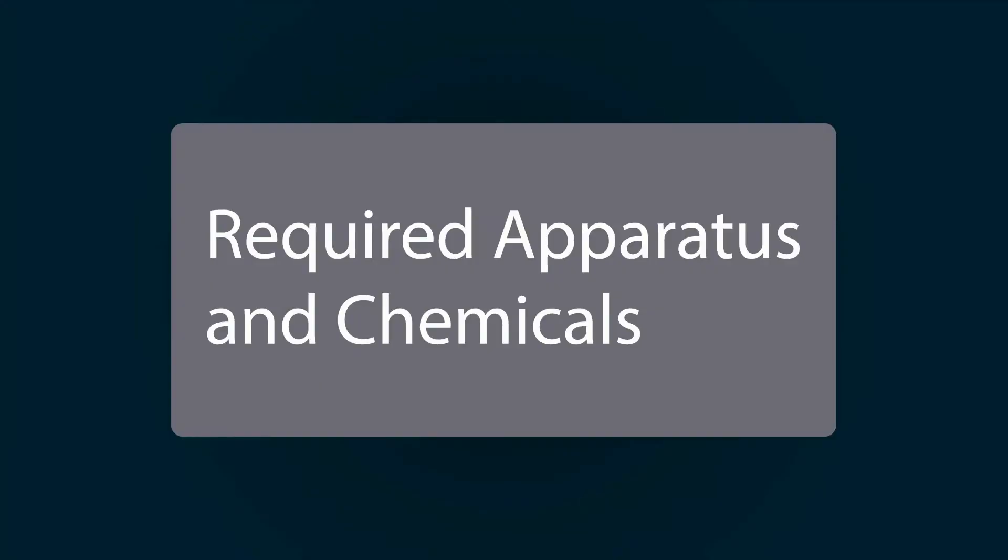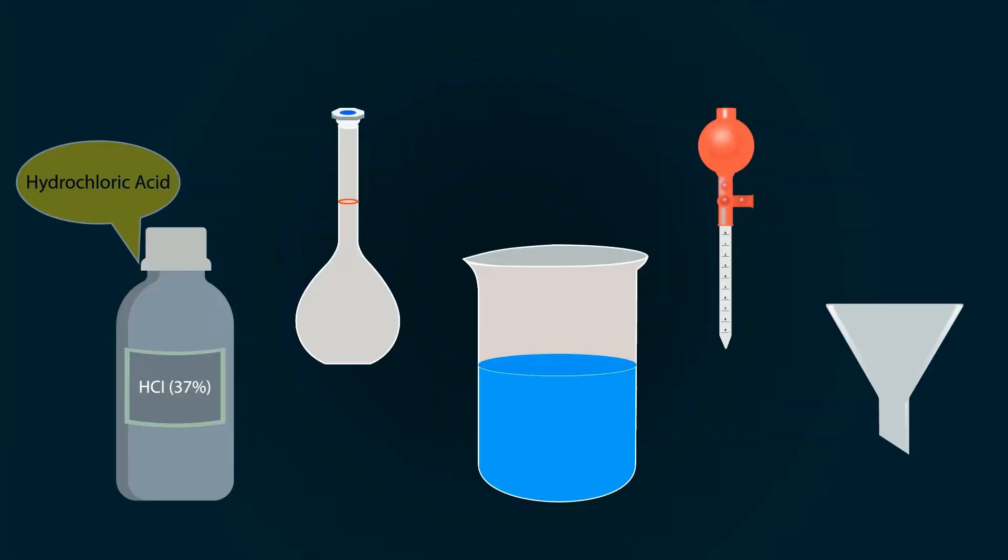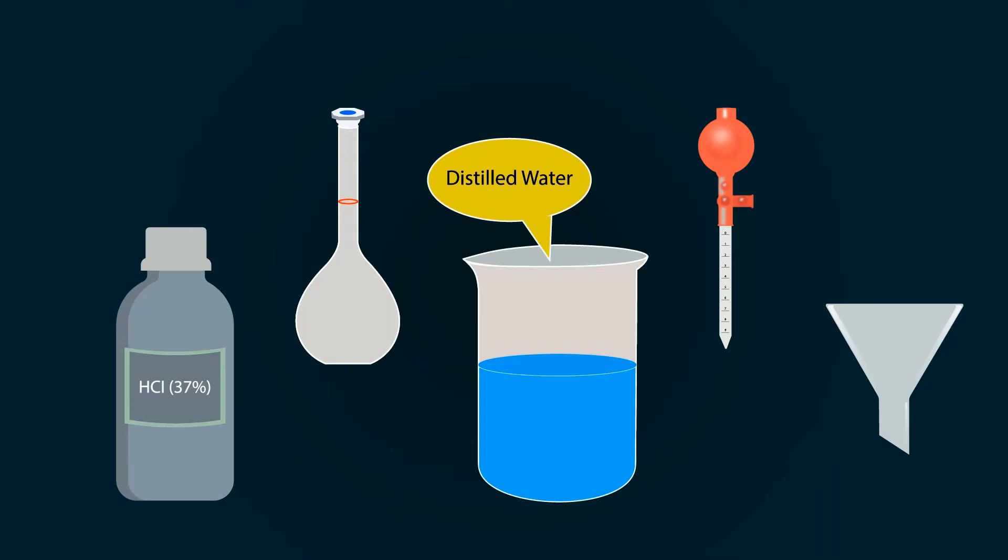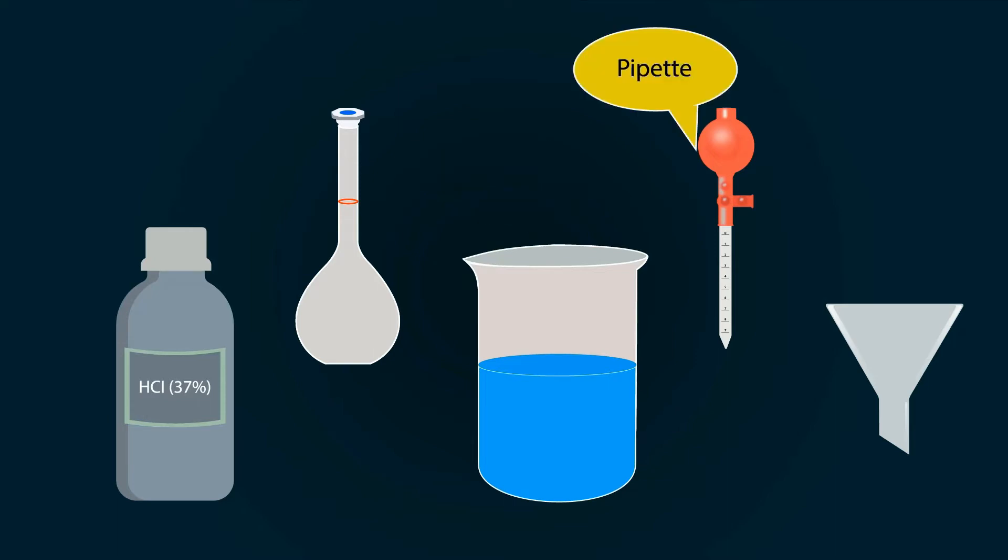The required properties and chemicals are hydrochloric acid, a measuring flask of 500 milliliters, distilled water in a beaker, a pipette, and a funnel.